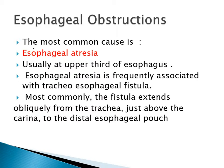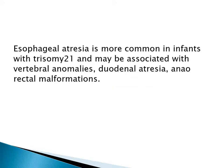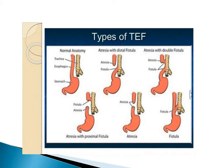In esophageal obstruction, the most common is esophageal atresia, usually at the upper third of the esophagus. Esophageal atresia is frequently associated with a TE fistula. Most commonly, the fistula extends obliquely from the trachea just above the carina to the distal esophageal pouch. Esophageal atresia is more common in infants with trisomy 21 and may be associated with vertebral anomalies, duodenal atresia, and anorectal malformation. The most common type is upper blind end with lower fistula.